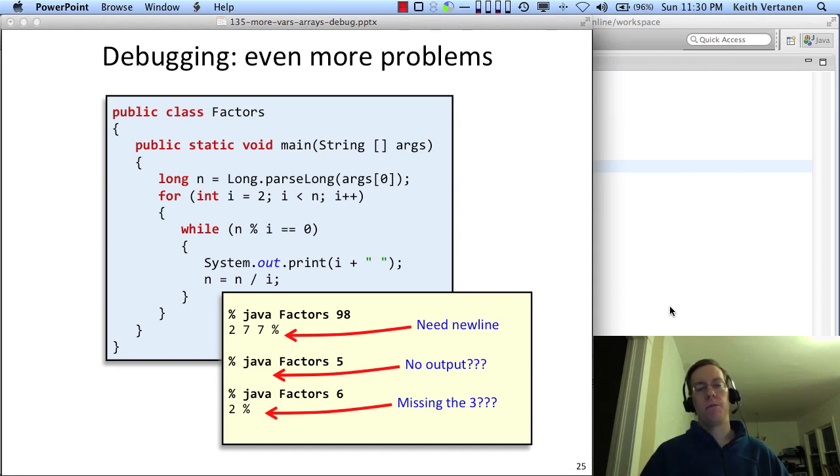Now we run it. Java factors 98. Looking a little better, 277. So that's right, except it doesn't go down a line. We need a new line after this input. If I run it for 5, well the prime factorization of 5, well it should just print out 5. 6 should print out 2 times 3. We get no input for 5 and for 6 we're missing the final 3.